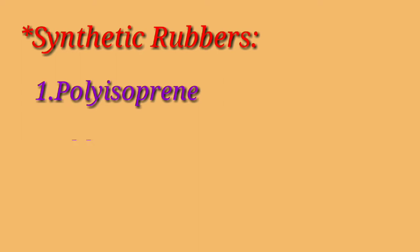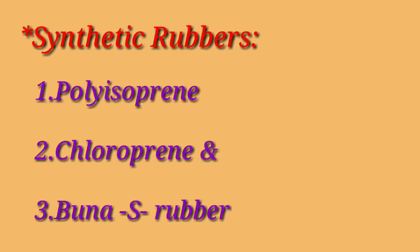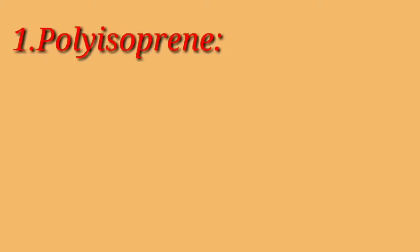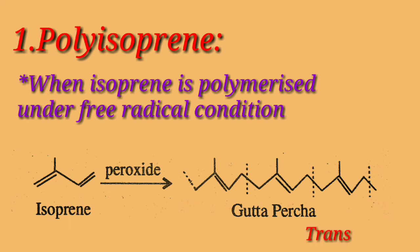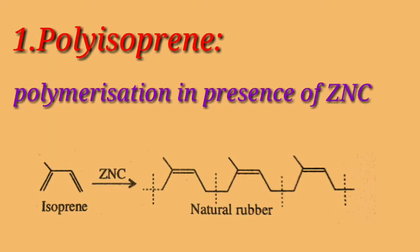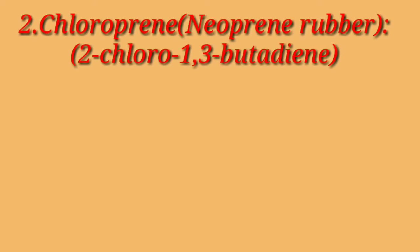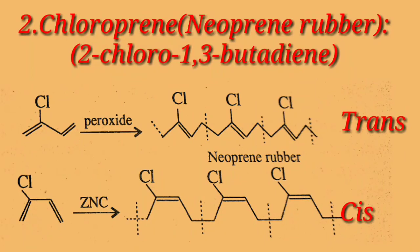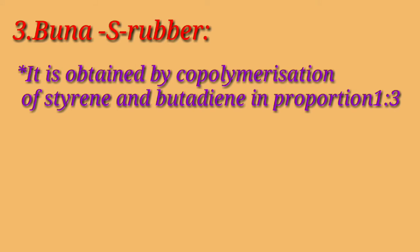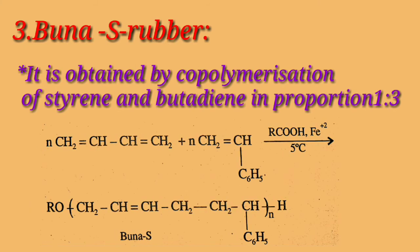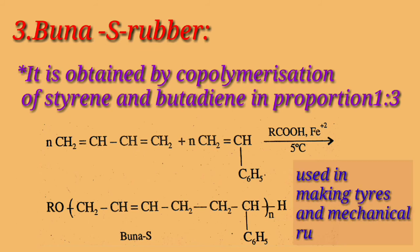Next is synthetic rubbers, which includes three important categories: first is polyisoprene, second is chloroprene, and third is Buna-S rubber. When isoprene is polymerized under free radical conditions in the presence of a peroxide, all-trans polyisoprene is obtained. On polymerization in the presence of Ziegler-Natta catalyst, it gives all-cis polyisoprene, which is termed natural rubber. Chloroprene gives trans or cis polymer by using a peroxide or Ziegler-Natta catalyst respectively. Buna-S rubber is obtained by copolymerization of styrene and butadiene in a proportion of 1:3. This is called a cold rubber as it is prepared at lower temperatures, and it is used in making tires and mechanical rubber goods.